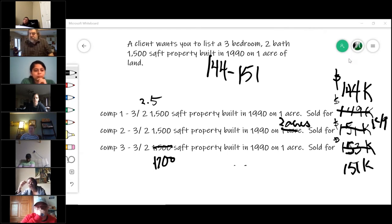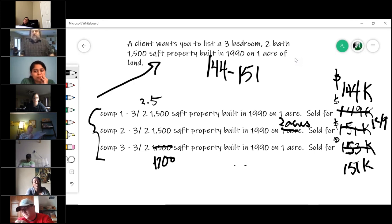Can comparables be adjusted up then? Because if you have two acres of land and they only have one acre—I always thought, like you said, land is more valuable—so wouldn't two acres of land make the value go up? No, no, no. We have to make these match ours. Oh, we have to make it match what we're going to list. Oh, okay.